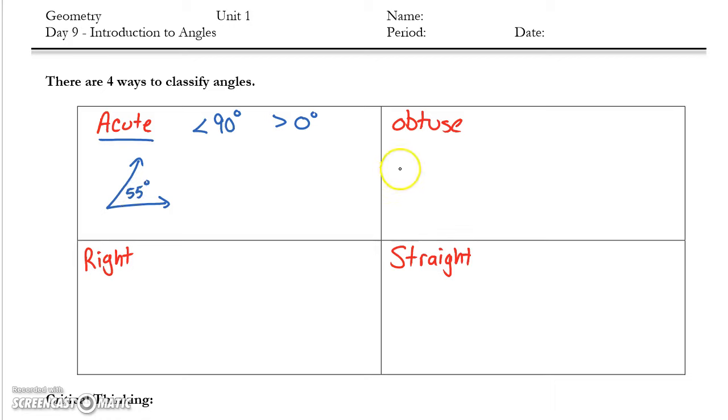An obtuse angle measures greater than 90 degrees, but also less than 180 degrees. An obtuse angle would look something along these lines and measure maybe 125 degrees, somewhere in between 90 and 180.